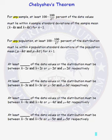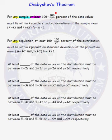In this lesson, we will talk about Chebyshev's theorem. This theorem says that for any sample, at least 100 minus 100 over k squared percent of the data values must lie within k sample standard deviations of the sample mean. This is true for any k greater than 1. k does not have to be an integer, but it must be greater than 1.